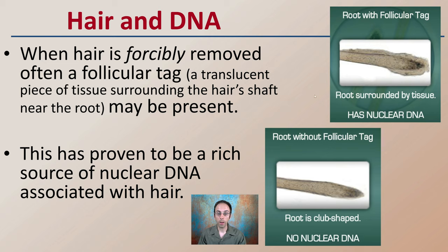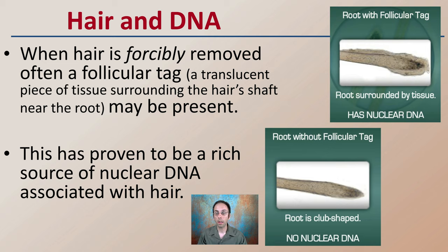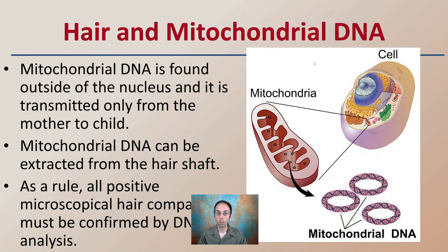Keep in mind, if you're finding a hair piece without the follicular tag, the root is club-shaped and there's going to be basically no nuclear DNA located here. So this is kind of the goldmine for finding DNA — you have those cells around the root of the hair.